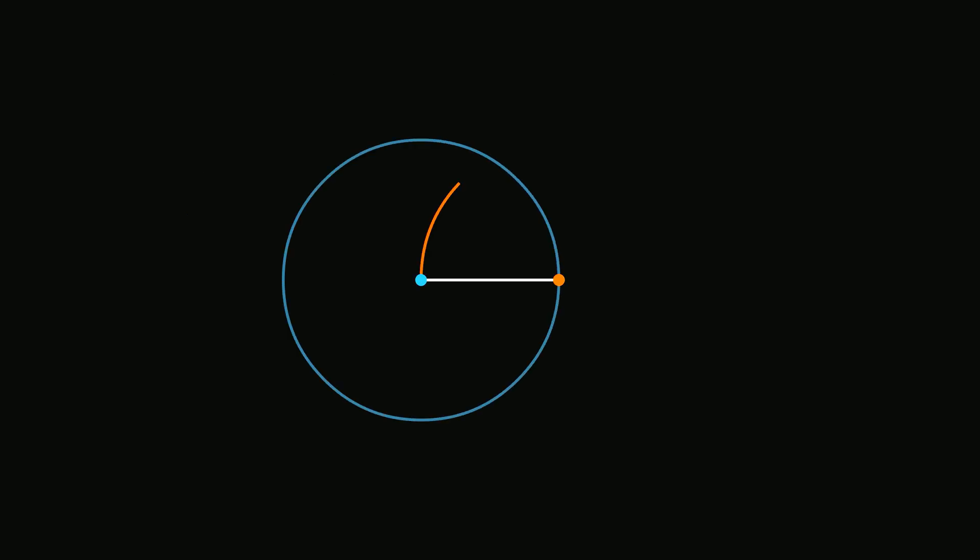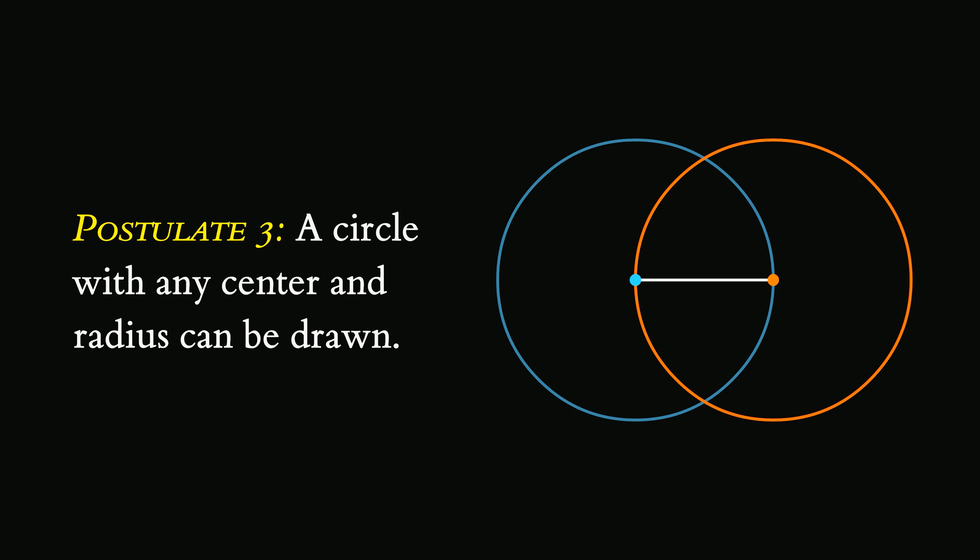If you were careful enough, you would have noticed that Euclid's proof hinged on the observation that the two circles intersect. And of course, they do intersect in the diagram. But how do we know this? With postulate 3, we can draw circles, but it doesn't actually say anything about how the drawn circles relate to each other.